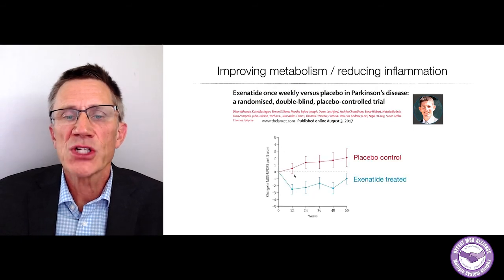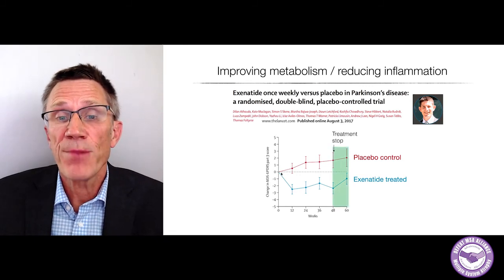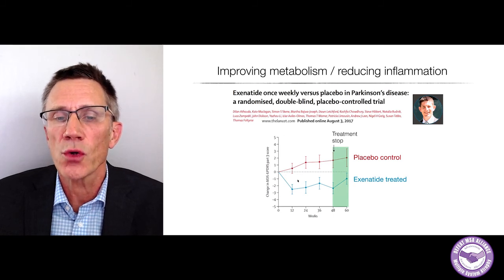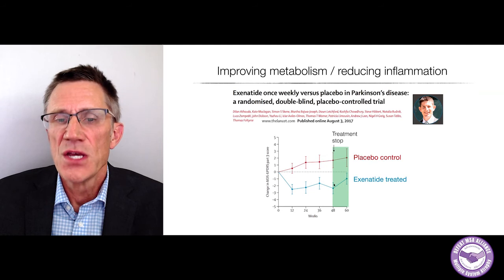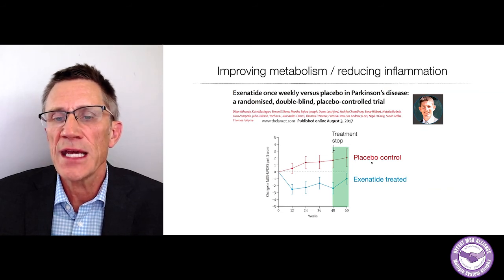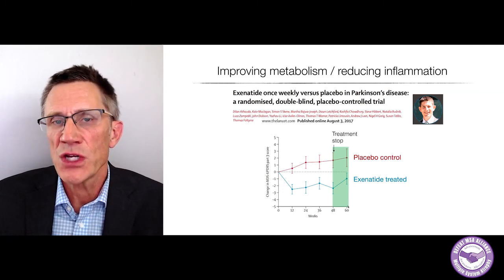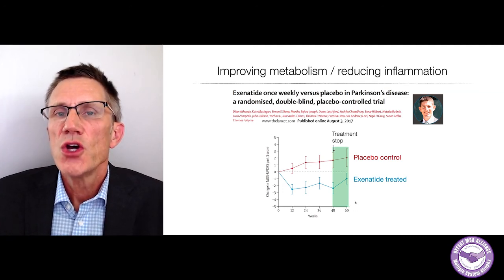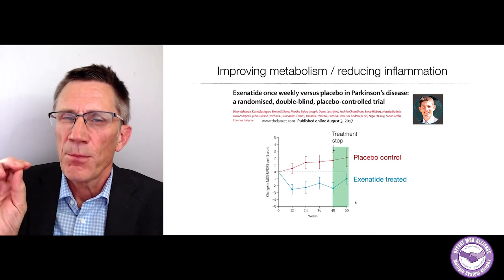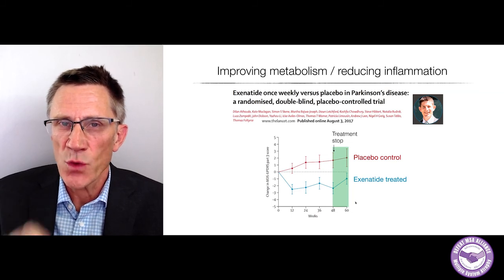In a paper published in Lancet Neurology by Tom Foltynie and his group, they saw that patients didn't deteriorate as much as controls when they received Exenatide. Notably, when the treatment was stopped, there was still a significant difference between the placebo group and those who got Exenatide — a study that went on for over a year. This suggested a possible disease modification in Parkinson's disease when using Exenatide.